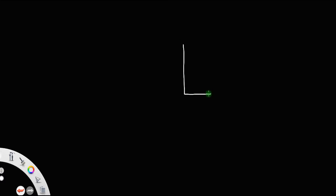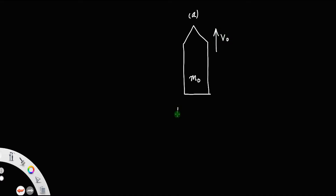Let m0 be the initial mass of the rocket — that is, the mass of the rocket plus the mass of the fuel — and v0 be the initial velocity. Here, time is equal to 0; we are considering the initial condition.